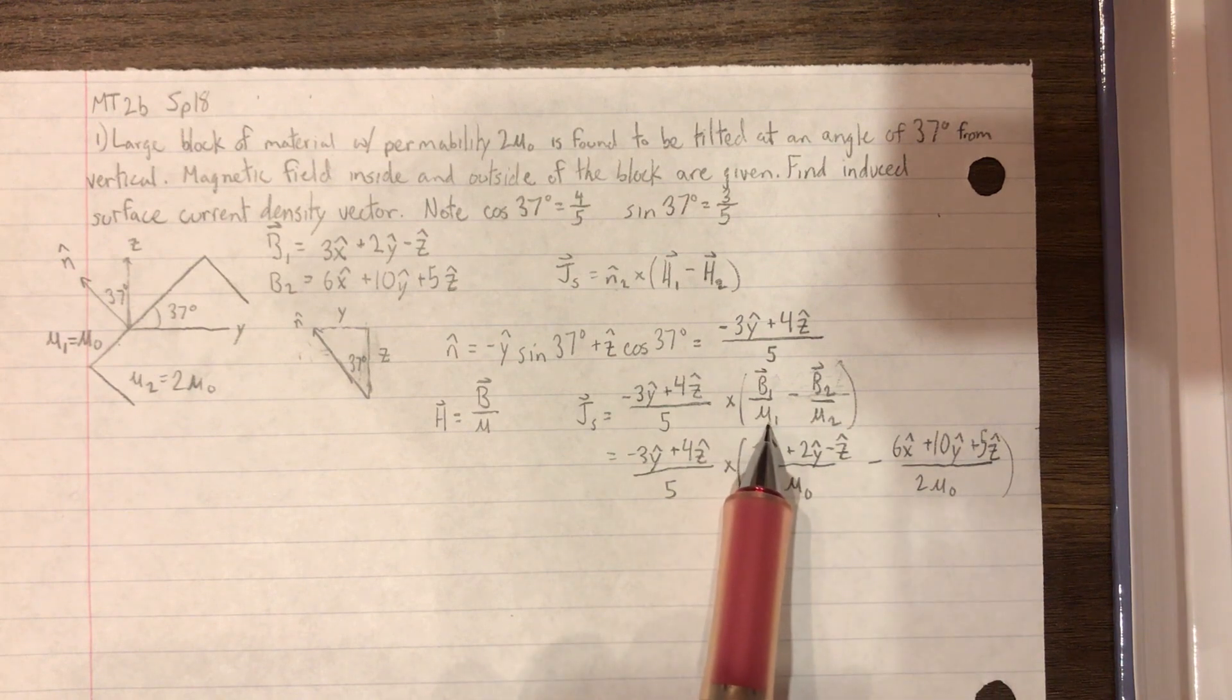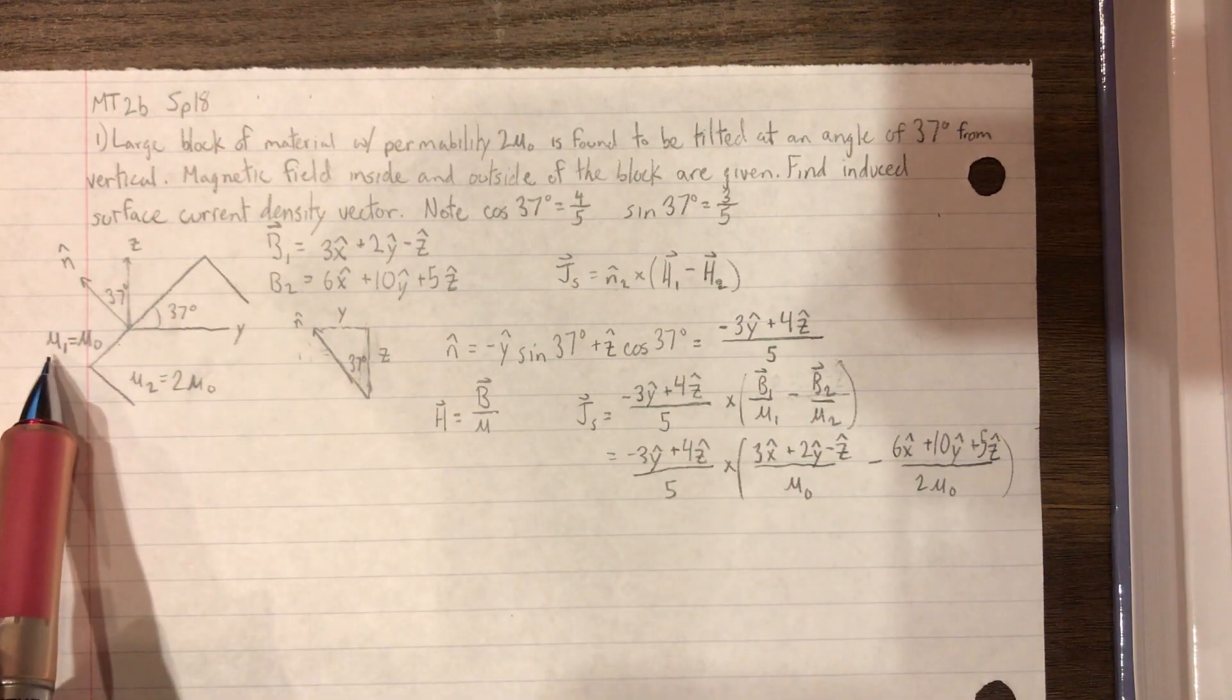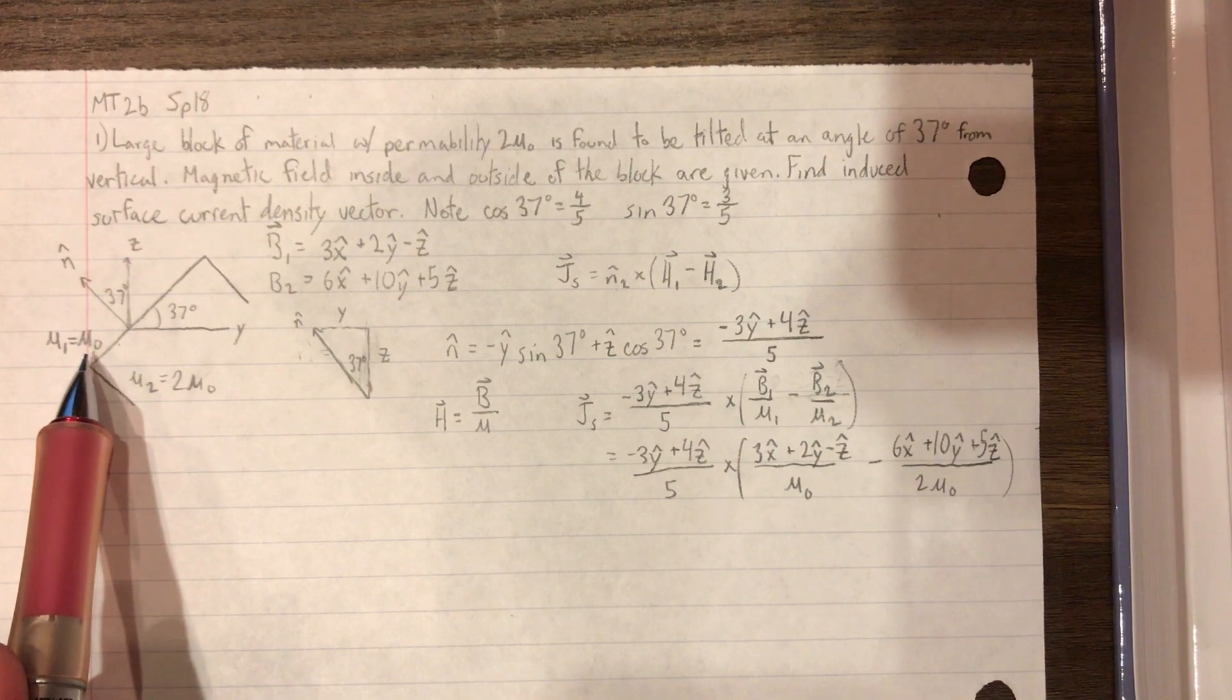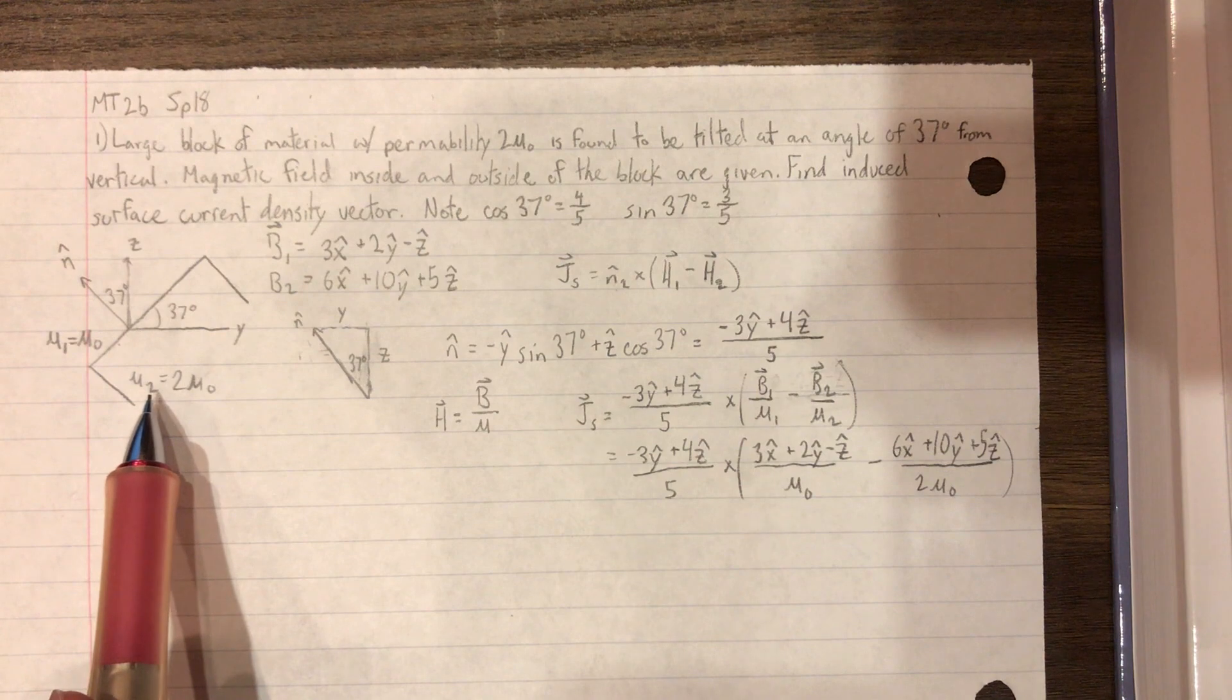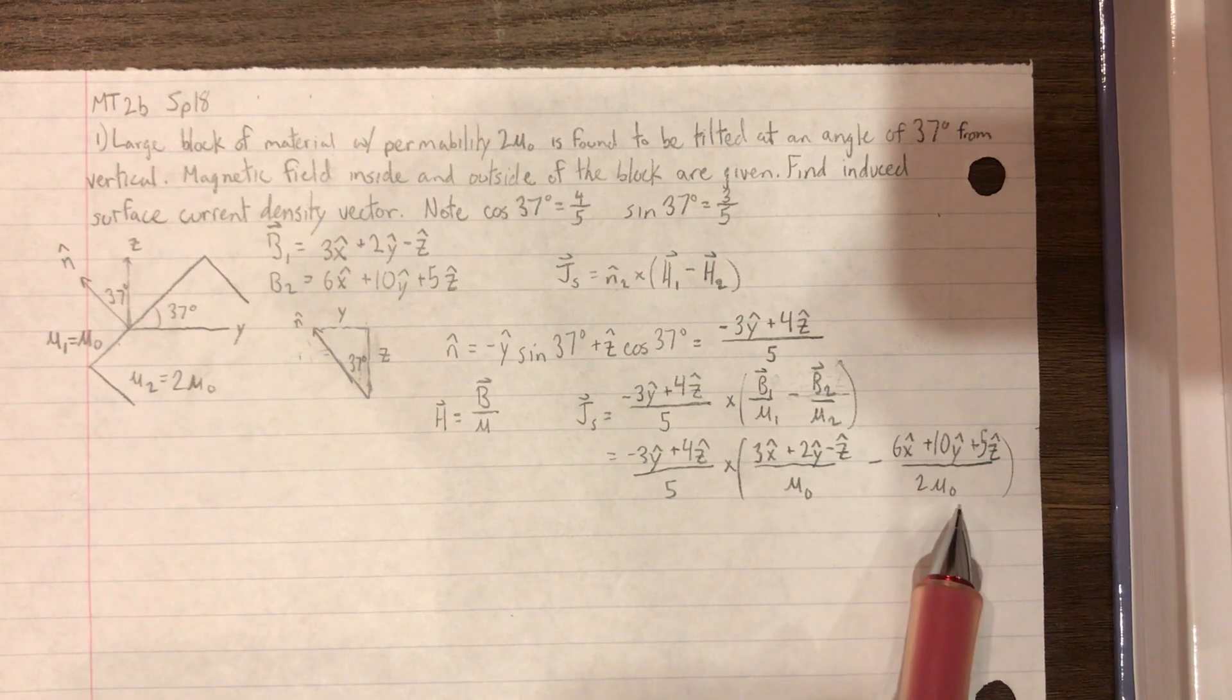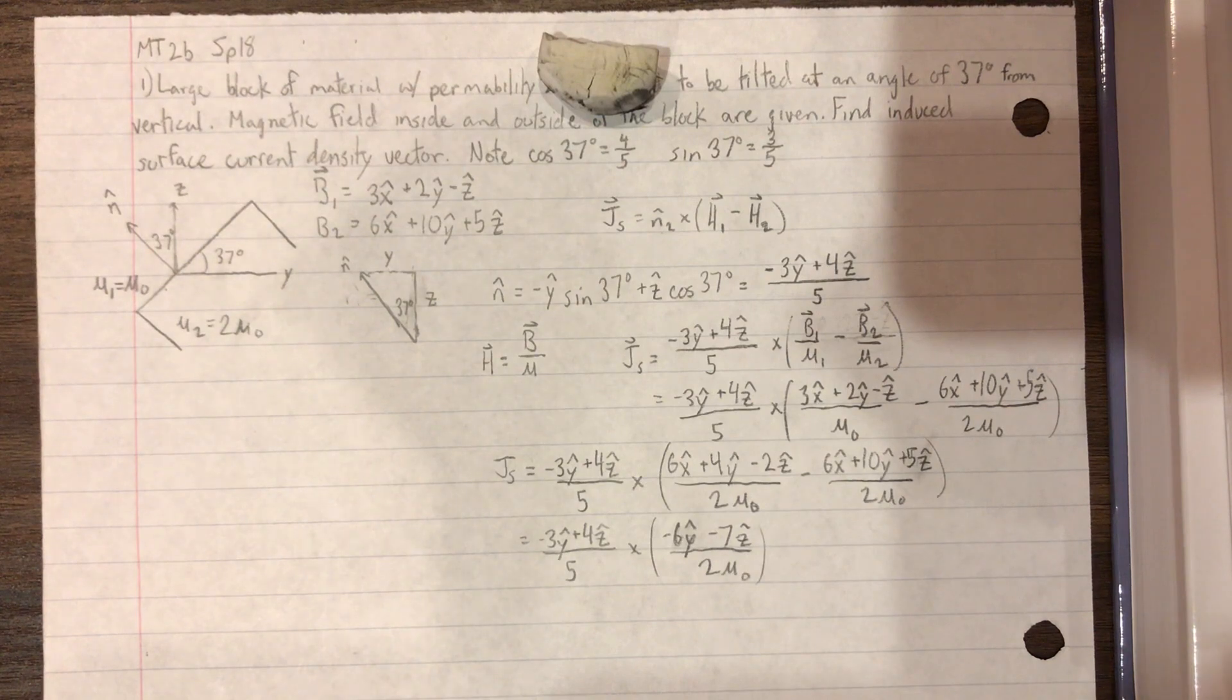And our mu1 is given from here, mu1 equals mu0. And our mu2 is also given, which is 2 mu0, which is this one right here.